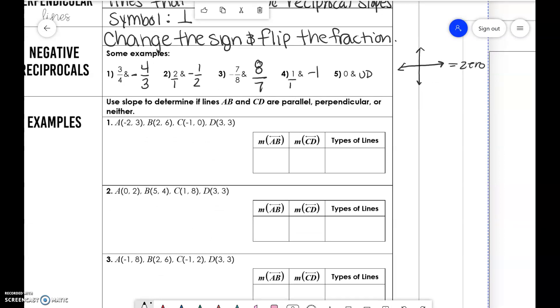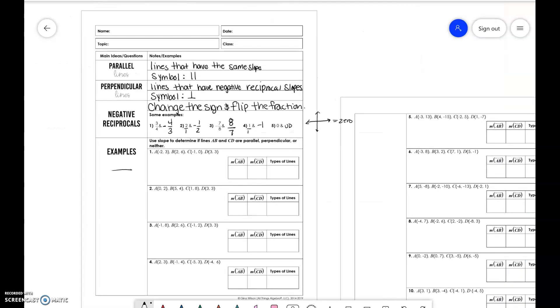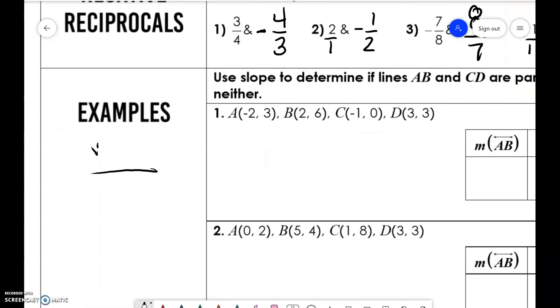Now we're going to determine if the slopes of the following lines AB and CD are parallel, perpendicular, or neither. To do this, we need to figure out the slope of those lines. Our slope is Y2 minus Y1 over X2 minus X1.